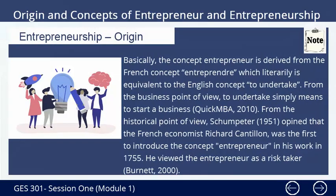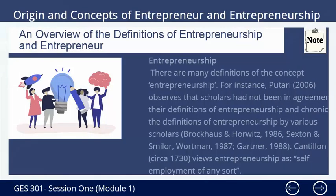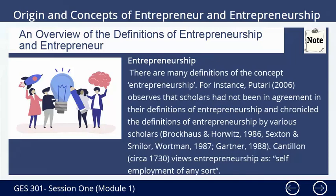Entrepreneurship Origin. Basically, the concept entrepreneur is derived from the French concept 'entrepreneur,' which is literally equivalent to the English concept 'to undertake.' From a business point of view, to undertake simply means to start a business. From the historical point of view, Schumpeter (1951) opined that the French economist Richard Cantillon was the first to introduce the concept entrepreneur. In his work in 1755, he viewed the entrepreneur as a risk taker.